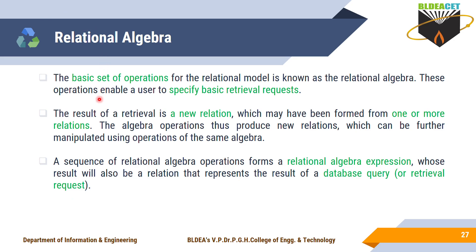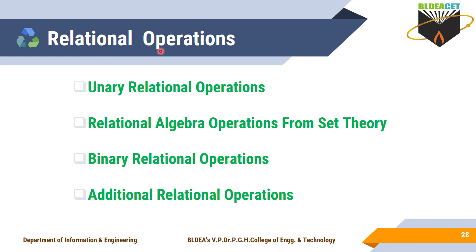The algebra operations produce new relations which can be further manipulated using operations of the same algebra. A sequence of relational algebra operations forms a relational algebra expression whose result will also be a relation, representing the result of a database query or retrieval request. In relational algebra, different types of operations exist: unary relational operations, relational algebra operations from set theory, binary relational operations, and additional relational operations.